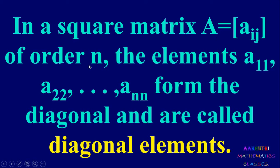In a square matrix A equal to [aij] of order n, the elements a11, a22, ..., ann form the diagonal and are called diagonal elements. These elements run from the left top to right bottom. In a square matrix of order 3, a11, a22, a33 are the diagonal elements.